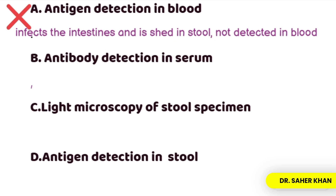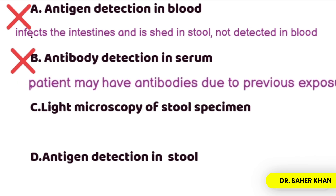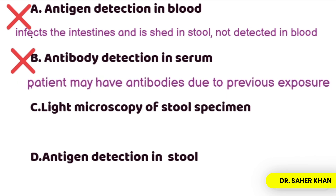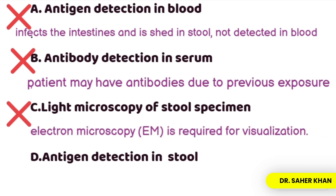Option two, antibody detection in serum, is also not useful for active diagnosis, as the patient may have antibodies due to previous exposure — so this is incorrect. Third, light microscopy of stool specimen, is again incorrect because light microscopy cannot detect rotavirus; it requires electron microscopy for visualization.